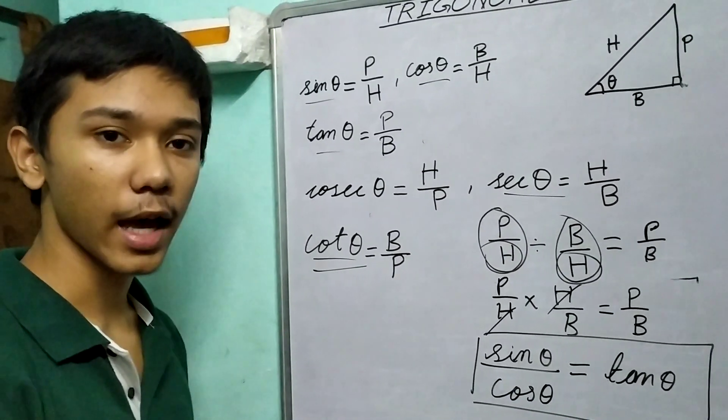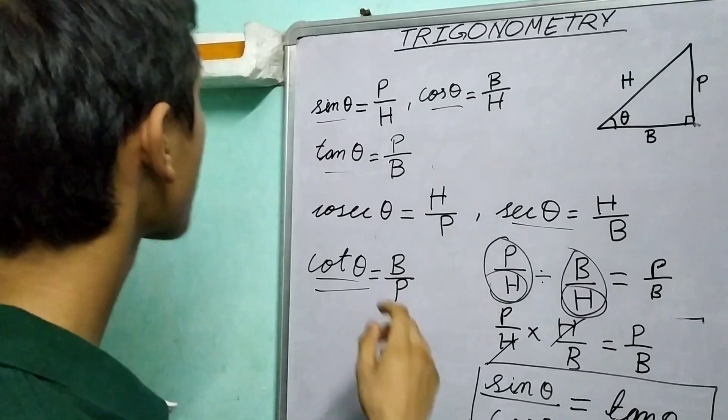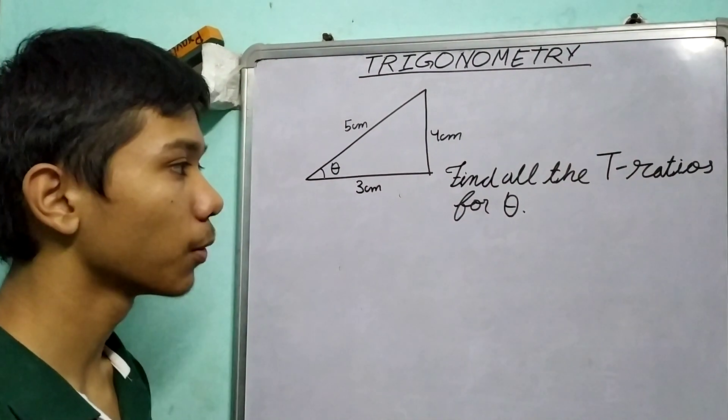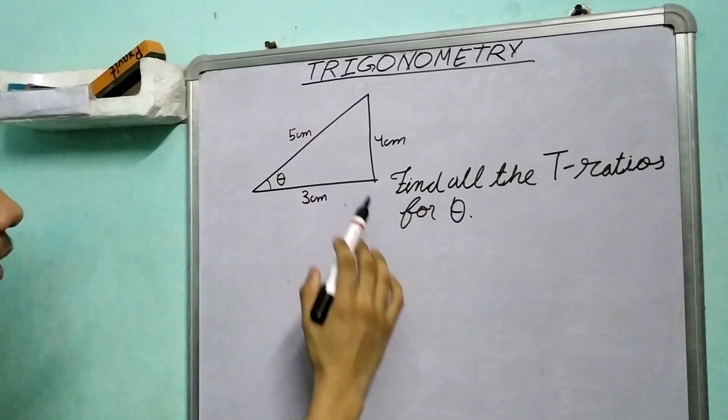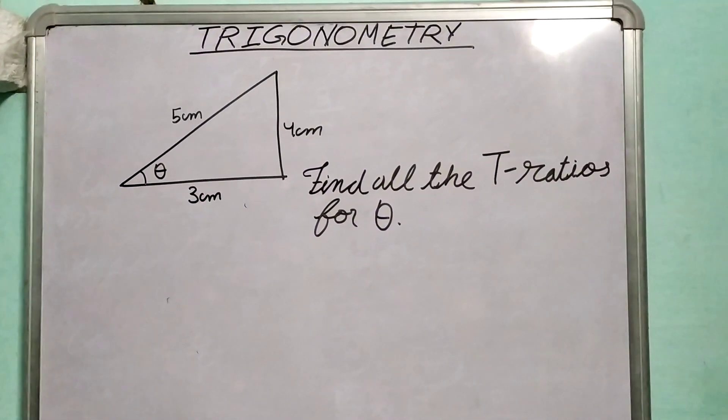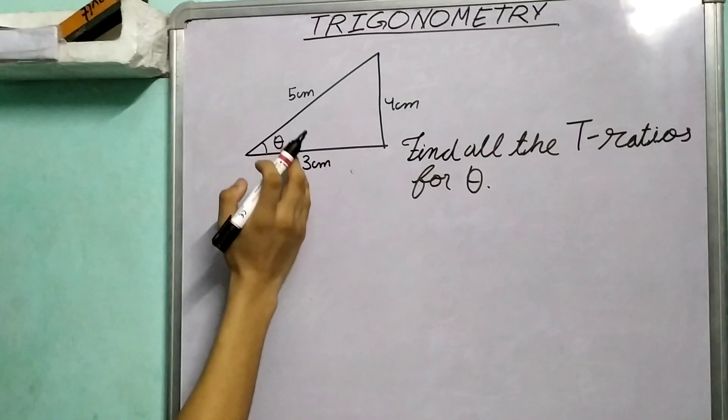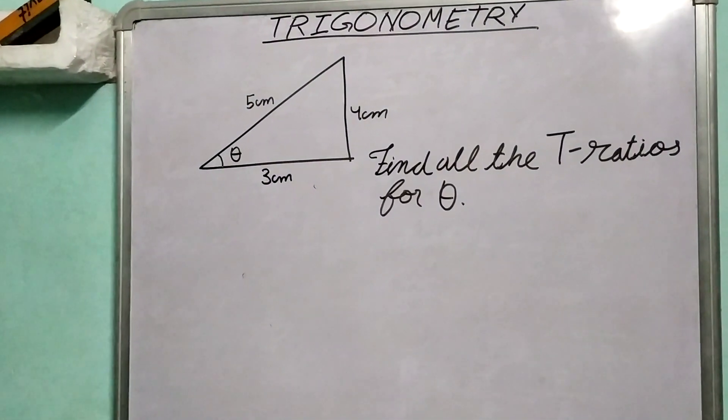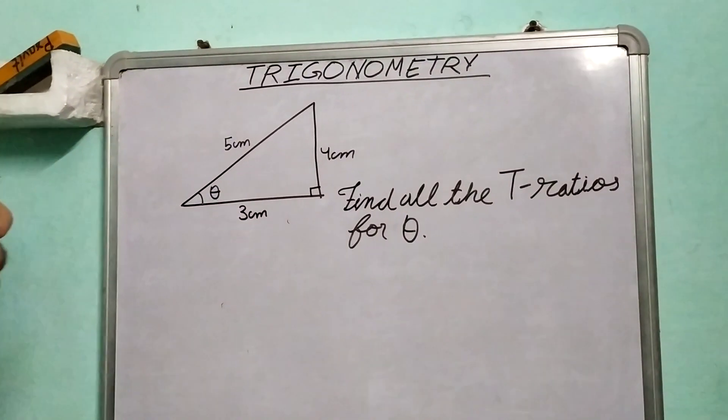So let us now quickly do an example based on what we have just learned. Now we have this question, we need to find all the trigonometric ratios for theta. Now I want you to carefully understand this triangle. This is a 3, 4, 5 triangle, one of the classic triangles which they teach us while teaching Pythagoras theorem.